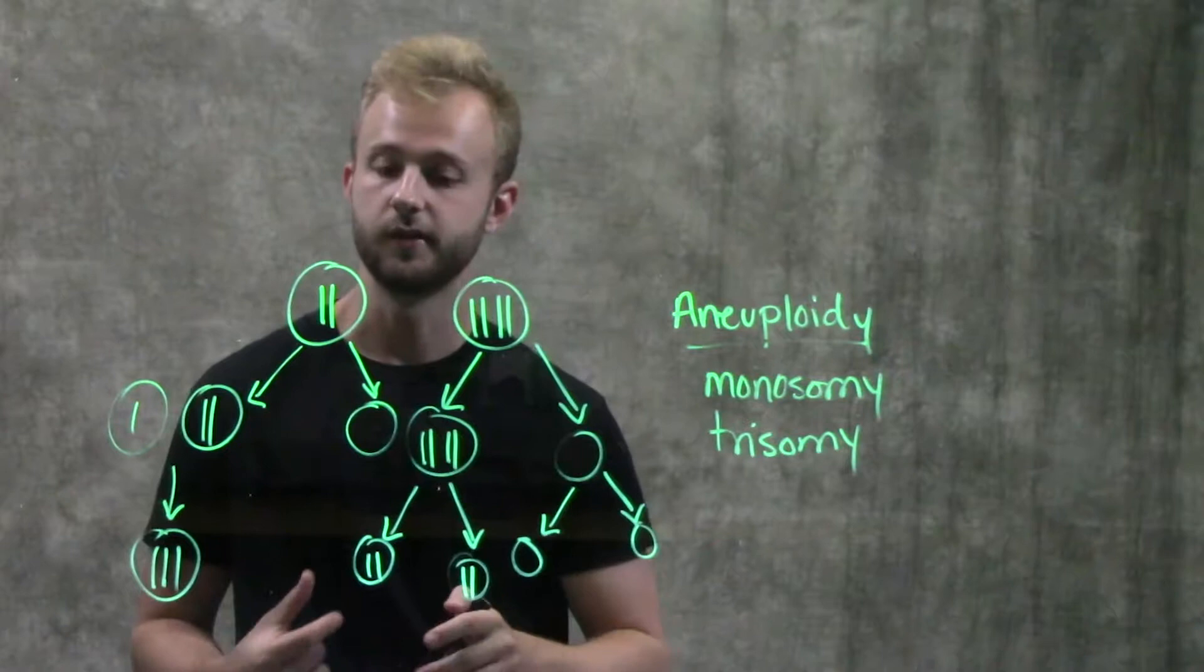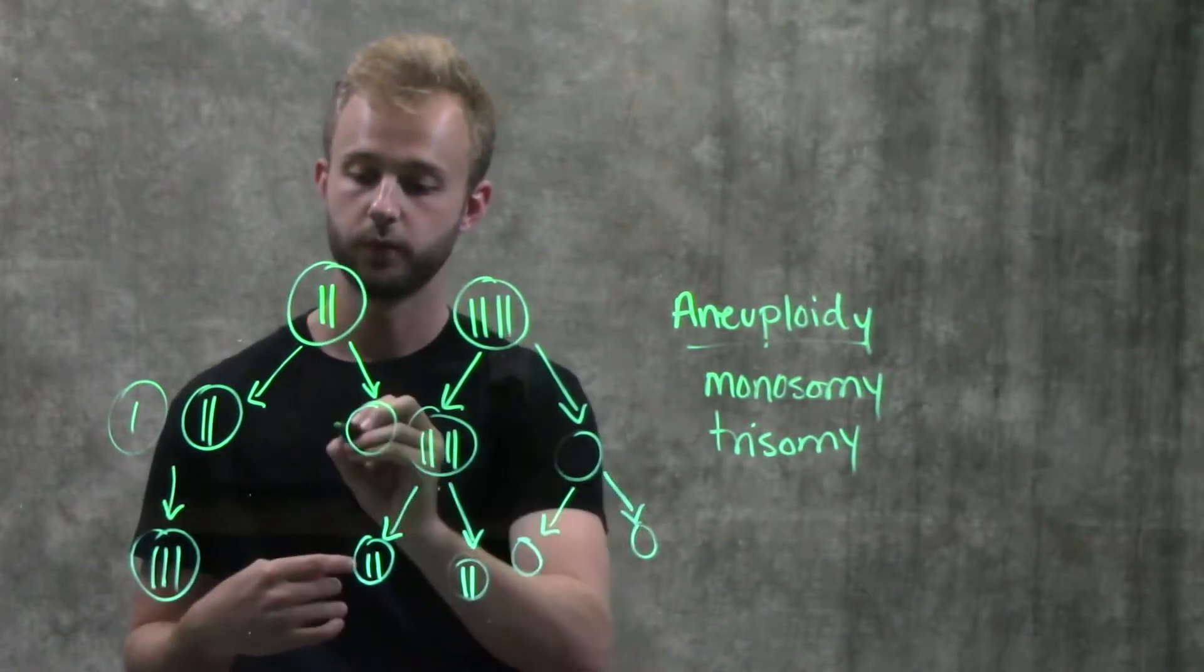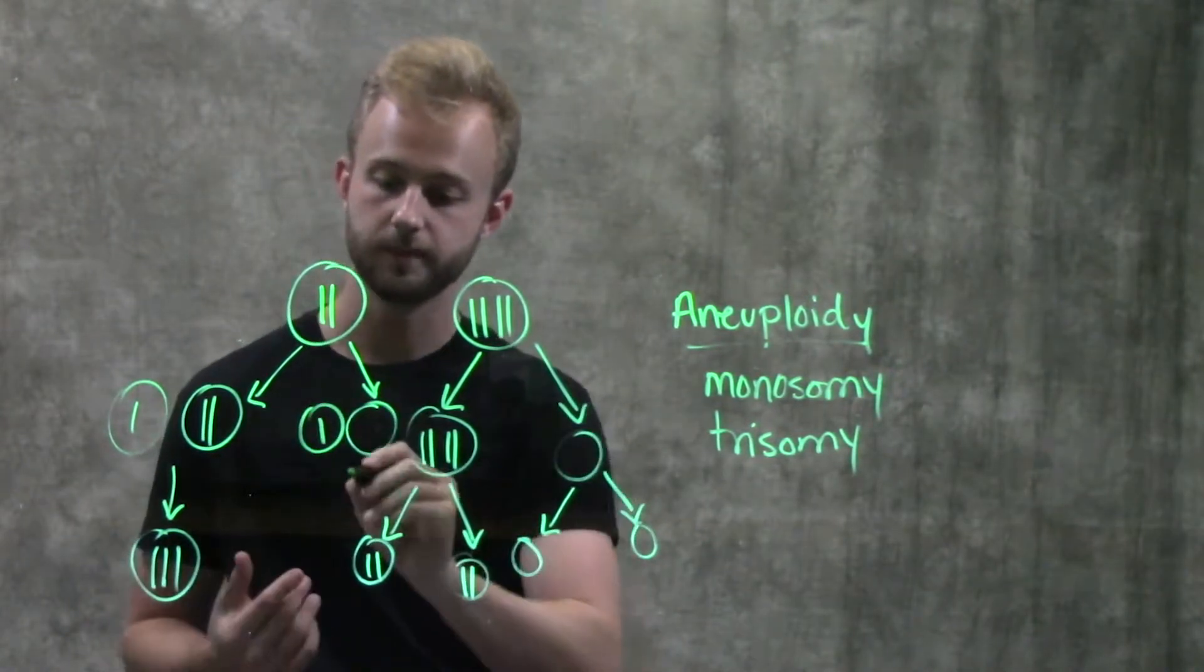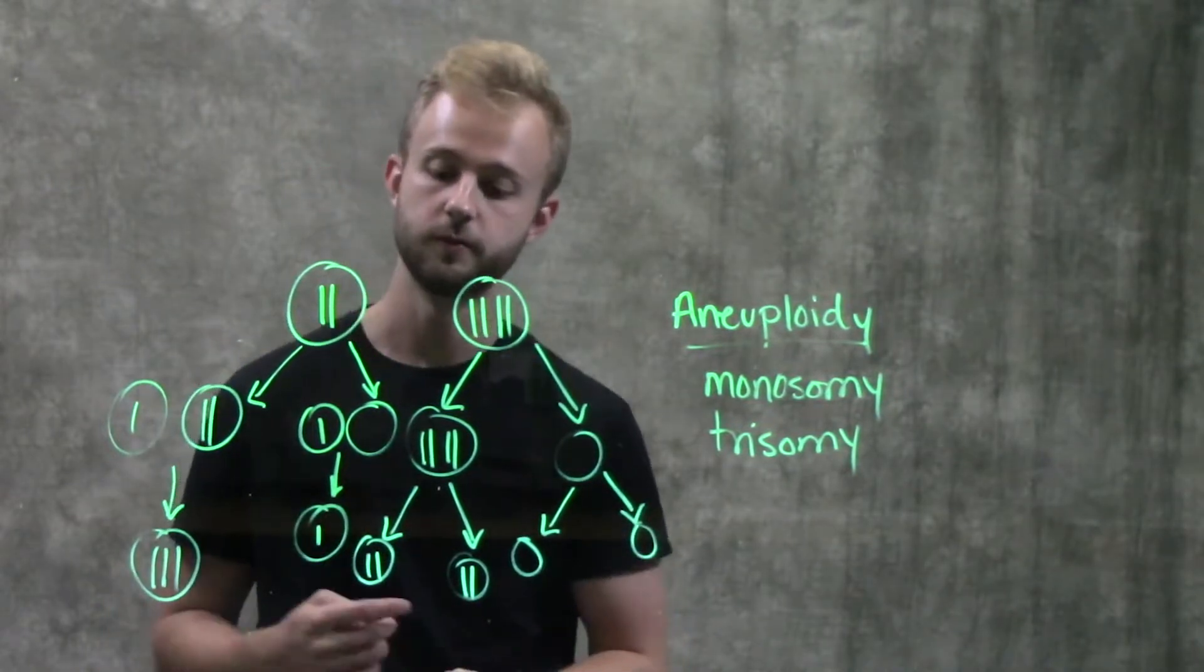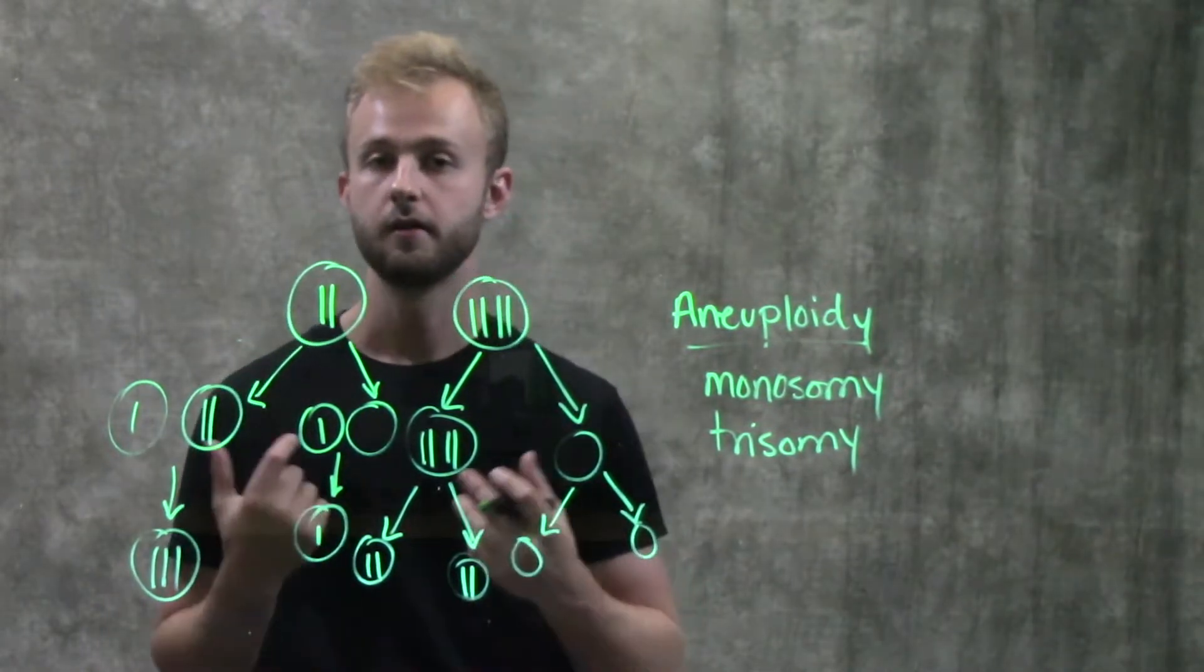For this one, for example, with no copies of this chromosome, when it fuses with a normal gamete, that zygote will only have one copy of that chromosome. So this zygote would be monosomic.